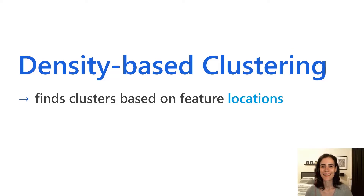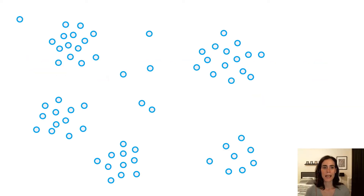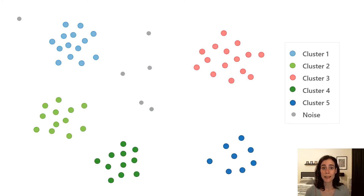Thanks Lauren. Let's start with density-based clustering. Density-based clustering finds clusters based purely on location. So if we have a set of points and want to see if there's any clustering — if the points tend to clump together — the result might look something like this: features that belong to clusters are marked with the same cluster color, and features that did not belong to a cluster are marked as random noise.